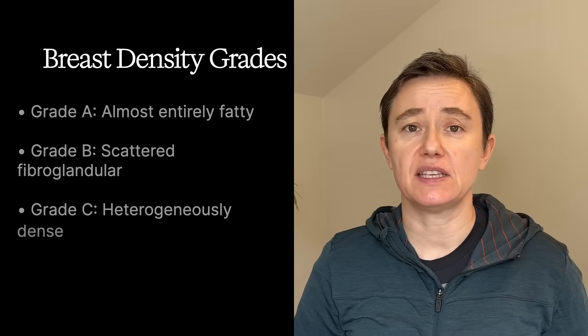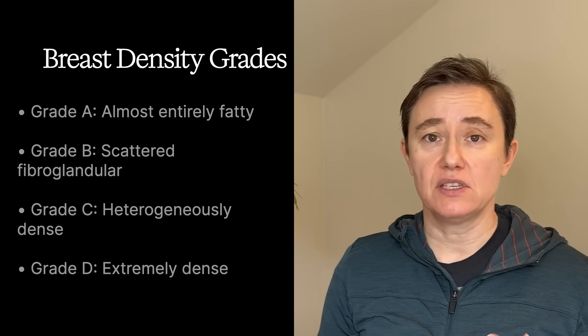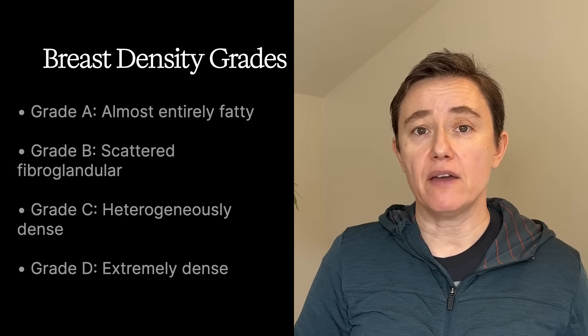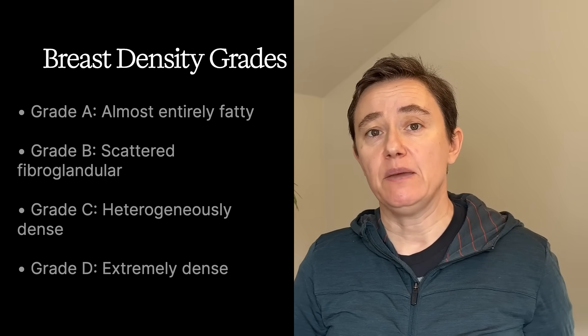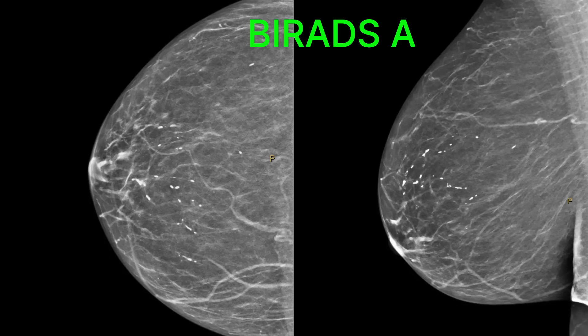Breast density is graded A to D — it's called BIRADS A, B, C, D, or volpara. Type A is almost entirely fatty breast tissue. You can see here on this mammogram that there is very little whiteness and you can see pretty much really well through this breast tissue. On a mammogram, you always get at least two views: the one on the left is called the CC view, and then you have the lateral projection view on the right.